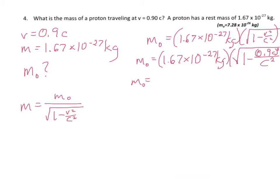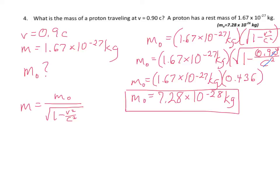Now we just need to plug in the rest of our given information and solve. Under the square root sign, we have 0.9C squared over C squared. In fact, C squared and C squared cancel, so the math under the square root is really 1 minus 0.9 squared. We can resolve that with a calculator — it has no units because those canceled out — and it's 0.436, which is the square root of the difference between 1 and 0.9 squared. Now I just multiply these two numbers together, and the mass of the traveling proton is 7.28 times 10 to the negative 28 kilograms.